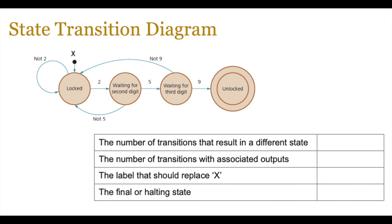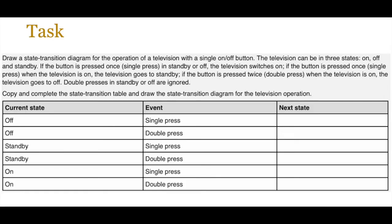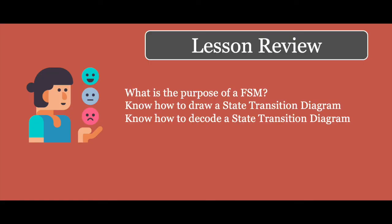Sometimes you might be given a state transition table and need to create a diagram based on it. Your task now is to go through an actual question. On screen you are given context and a state transition table listing all the different states and the events that allow transitions. You will need to read the paragraph and work out what happens for each current state and input — for example, if the current state is off and you do a single press on the remote, what's the next state? Then you will construct a state transition diagram based on that table.